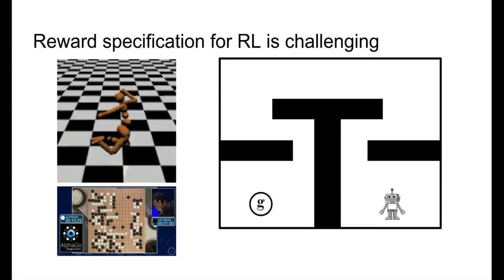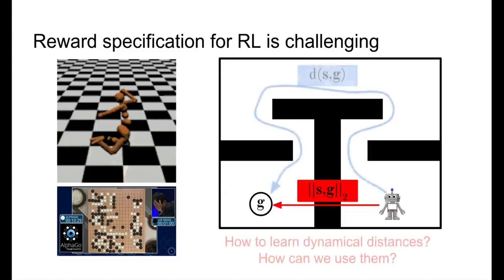But how do we measure proximity? If you use Euclidean distance, the shaping may be misleading. In this paper we ask, what is the ideal distance to use? We posit that the ideal distance would tell the agent how many time steps remain until the goal. Such a distance is aware of the environment dynamics, and we therefore call it the dynamical distance.